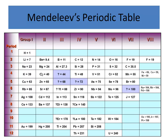He knew that there was calcium with a mass of about 40, and he also knew that there was titanium with a mass of about 48. But in the periodic table, there was something that should have fit in between. He predicted there would be an element with a mass of about 44 that hadn't been discovered yet. And lo and behold, if you look at the periodic table, there's scandium — he predicted that scandium existed. It had a mass of about 44; he was a little off, it had a mass of 45. But it was pretty impressive that he predicted the element would exist way before it was discovered.